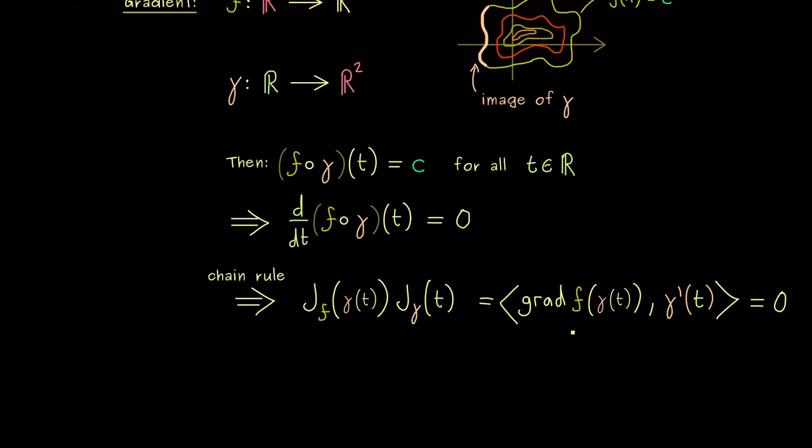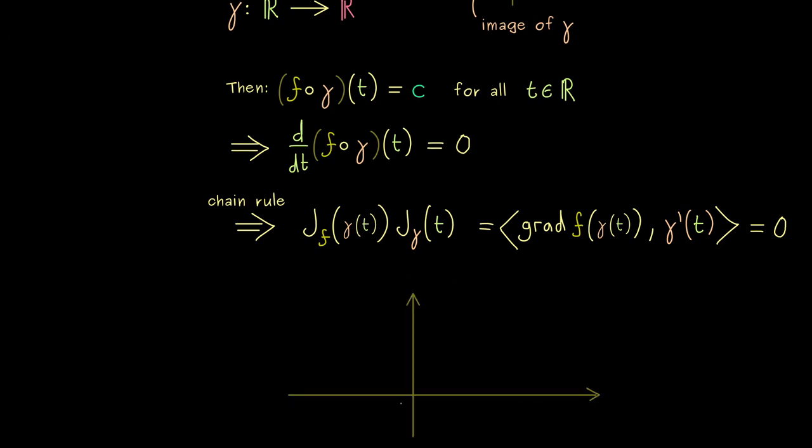Now in order to understand what this means we have to look at the image of gamma again. Hence again in the two dimensional plane it was given by such a curve. And then you should know if you pick any point on this curve the derivative of gamma, gamma prime, is tangential to the curve. Indeed this immediately follows from how we define the derivative as a limit of a difference quotient.